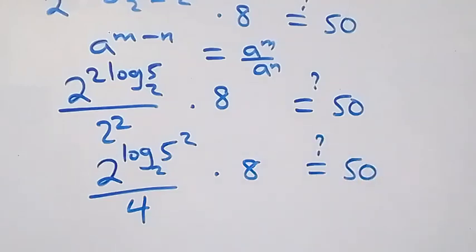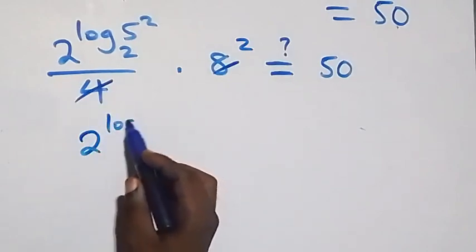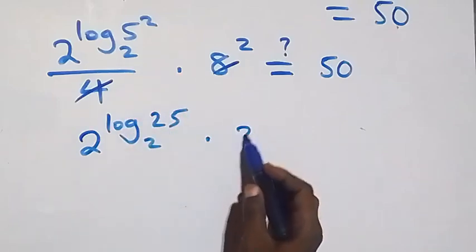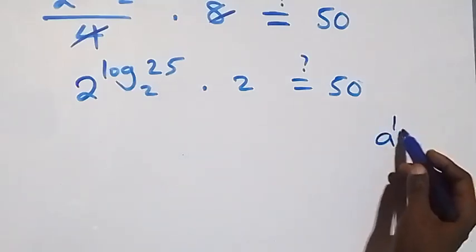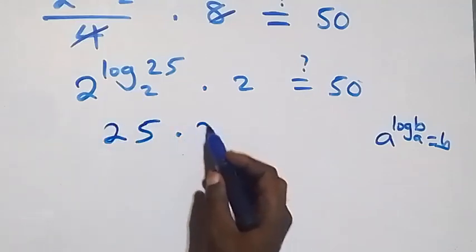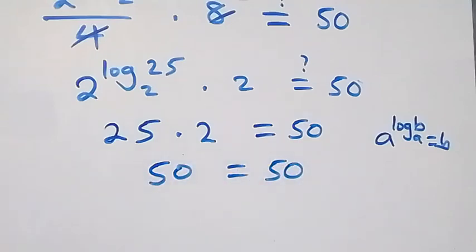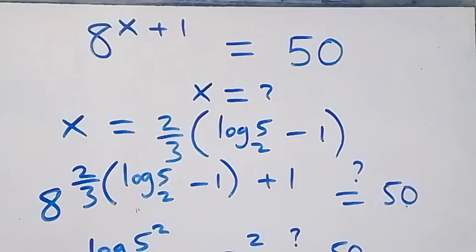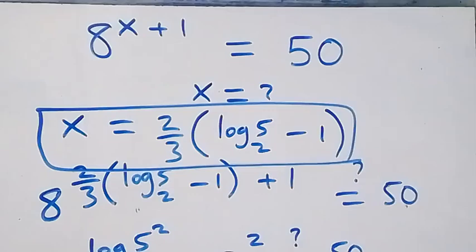Simplifying: 4 goes into 4 once and into 8 twice, giving 2 raised to power log₂(5²), which is log₂25, times 2 equals 50. Using the identity a raised to power log_a(b) equals b, we get 25 times 2 equals 50, and indeed 25 times 2 is 50. Left-hand side equals right-hand side, confirming x equals 2 over 3 times (log₂5 minus 1). Thank you for watching — subscribe for more videos, turn on the notification bell, and see you in the next class!